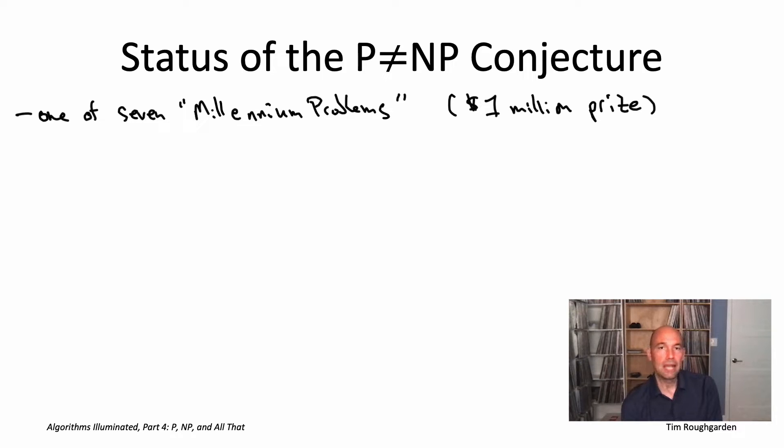While nobody actually knows whether or not the conjecture is true, almost everybody has an opinion. Almost everybody thinks the conjecture is true. The majority belief is that P is not equal to NP, but it's not a 51% majority - it's more like 90-something percent of theoretical computer scientists fully expect this conjecture to someday be proved. One notable figure who placed a bet in the opposite direction was the famous logician Kurt Gödel. In 1956, he wrote a letter to John von Neumann about whether you could in an automated way compute proofs not too much longer than the shortest possible proof. Gödel conjectured that there should be an automated procedure for coming up with short proofs, which is equivalent to P equals NP.